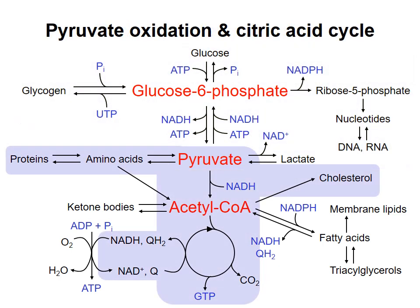The next topic will cover oxidation of pyruvate to acetyl-CoA and carbon dioxide, and the oxidation of carbons in the citric acid cycle to produce the reduced electron carriers NADH and QH2. In this topic, we'll also touch briefly on how other molecules, such as amino acids, are made.